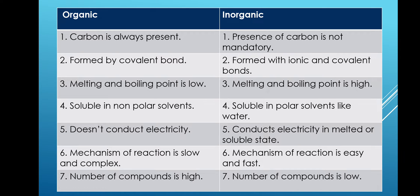Organic compounds are always found with covalent bonds. For example, methane, ethane, or ethanol — every organic compound is found with covalent bonds. But inorganic compounds are found with ionic bonds or covalent bonds; any bond can be present, both of these bonds can be present.